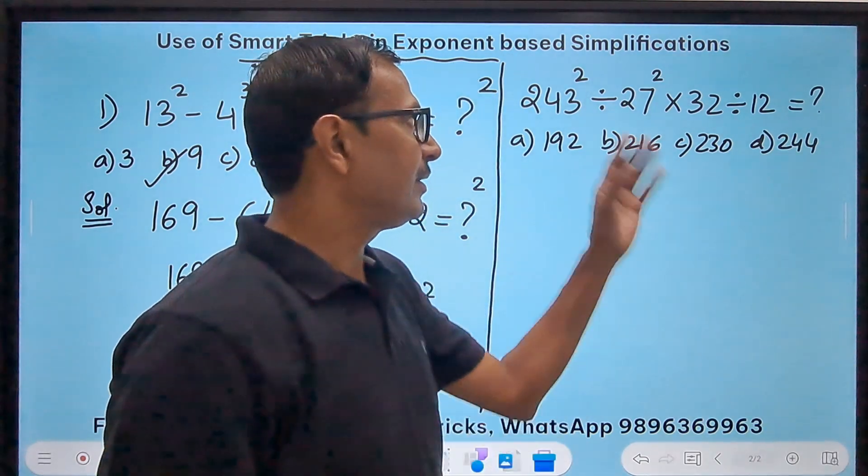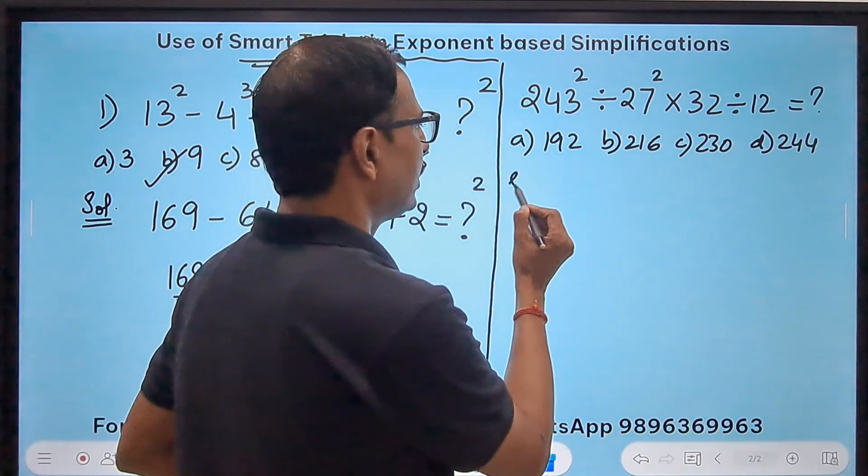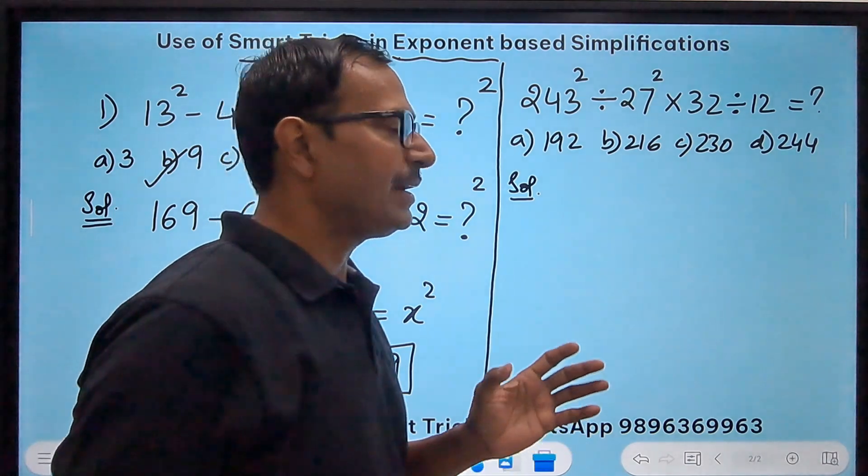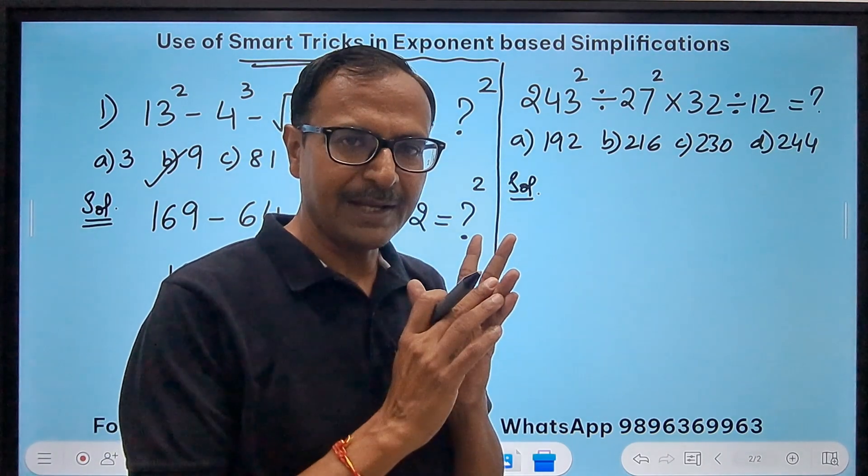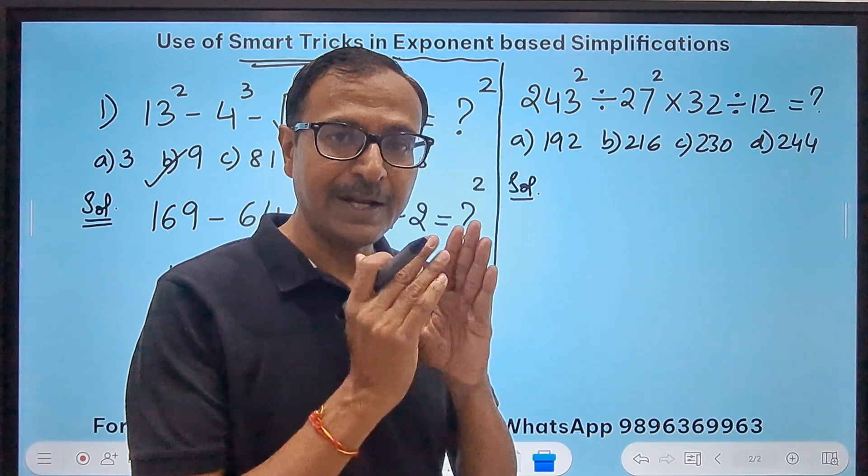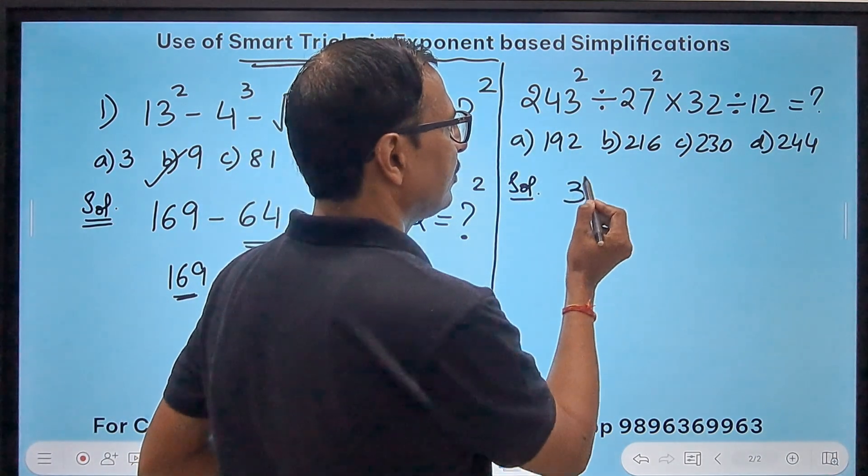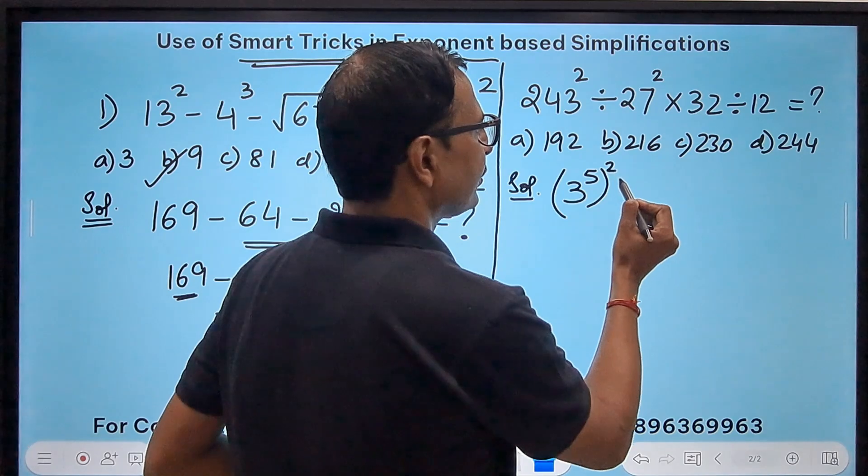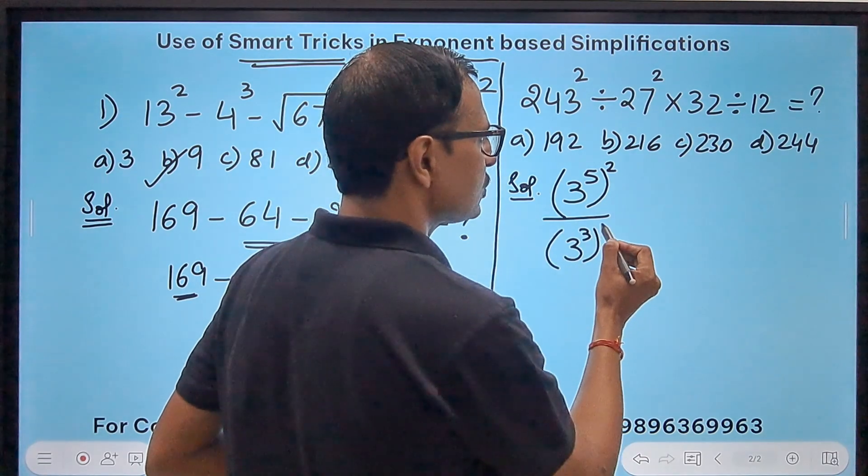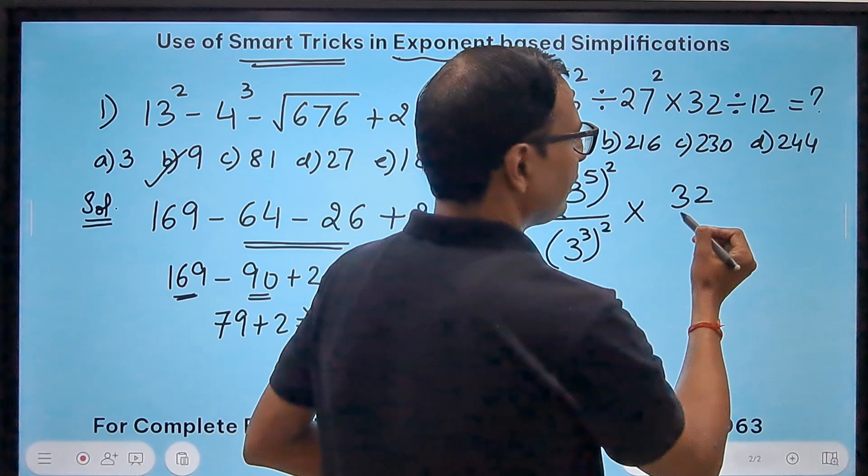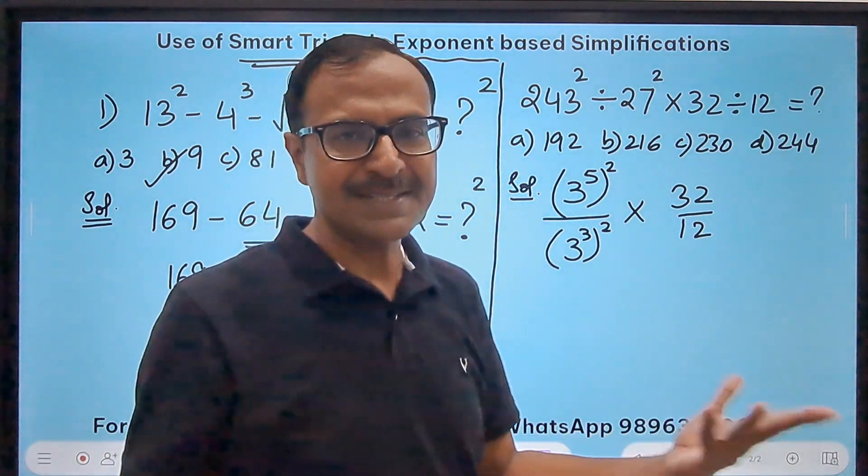Now let's see how you can solve this. Would you do 243 square here and 27 square here? Well I won't do it because I know that 243 actually is expressible or it can be expressed in the form of exponents. Do you know 3×3=9, 9×3=27, 27×3=81, and 81×3=243. So this 243 is actually 3^5 and then we have a power 2 also. Likewise divide means upon, 27 is 3³ and we have a square also, followed by a multiply, and then again we have the divide, 32 divided by 12.